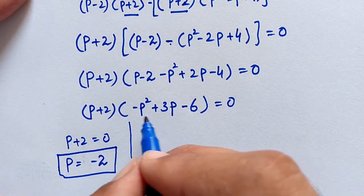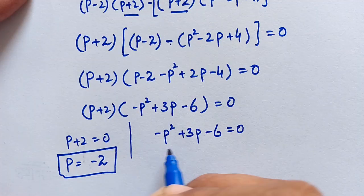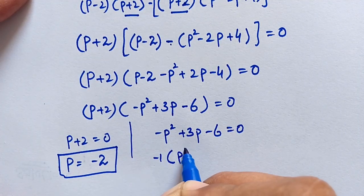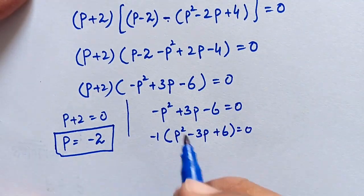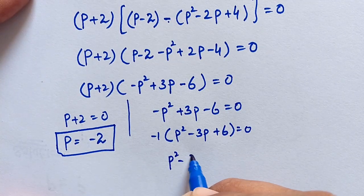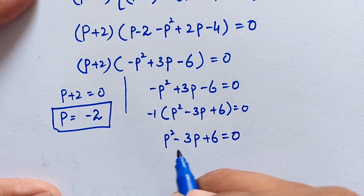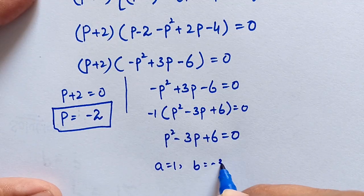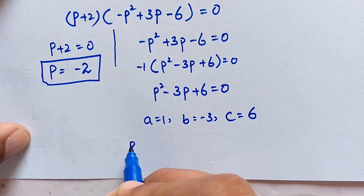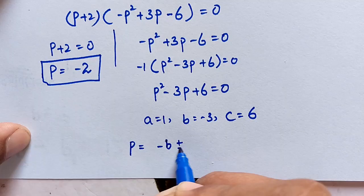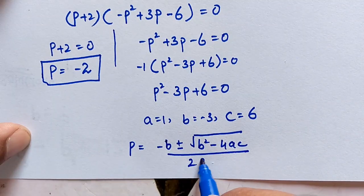Case two: minus p squared plus 3p minus 6 equals 0. Dividing both sides by minus 1 gives p squared minus 3p plus 6 equals 0. We solve this using the quadratic formula, where a equals 1, b equals minus 3, and c equals 6. The quadratic formula is p equals minus b plus or minus square root of b squared minus 4ac, divided by 2a.